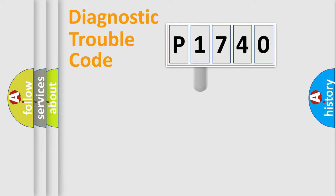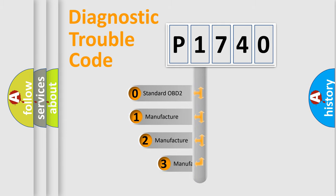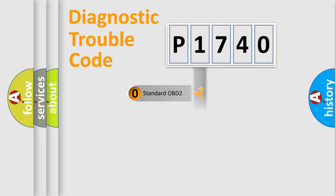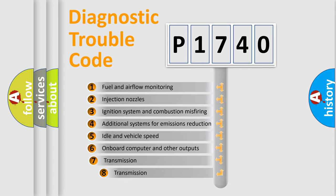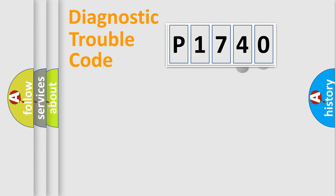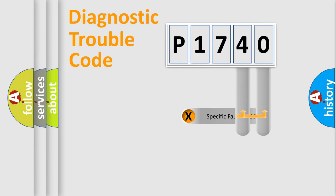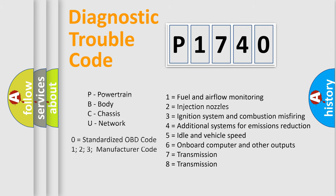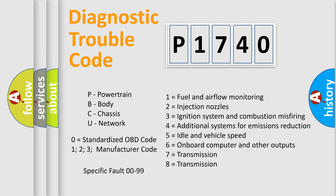This distribution is defined in the first character of the code. If the second character is expressed as zero, it is a standardized error. In the case of numbers 1, 2, or 3, it is a more manufacturer-specific expression of a car-specific error. The third character specifies a subset of errors. The distribution shown is valid only for the standardized DTC code, and only the last two characters define the specific fault of the group. This division is valid only if the second character is expressed by the number zero.